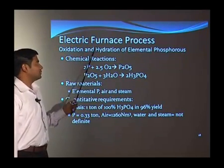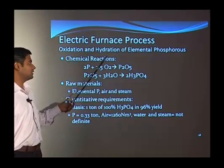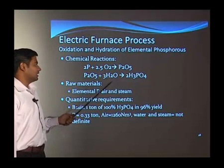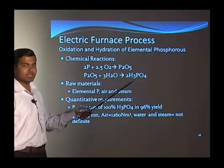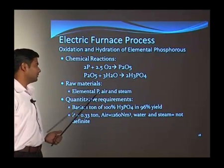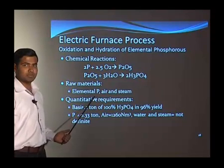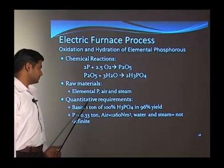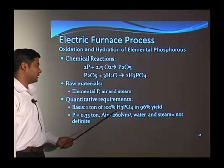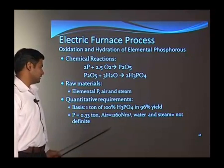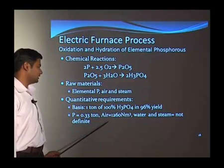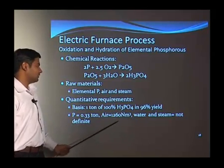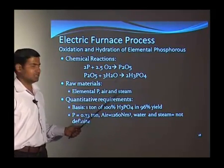Now we will see the electric furnace process and the oxidation and hydration of elemental phosphorous. The phosphorous is converted into phosphorous pentoxide in the combustion chamber, where water produces phosphoric acid from the phosphorous pentoxide. We require elemental phosphorous from the earlier process, air, and steam to heat it. The quantitative requirements for 1 ton of 100 percent phosphoric acid at 90 percent yield: elemental phosphorous 0.33 ton, 1260 Newton meter cube of air; water and steam amounts depend on reaction zone conditions.